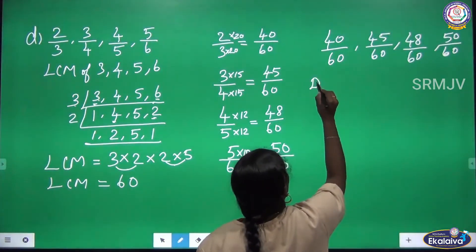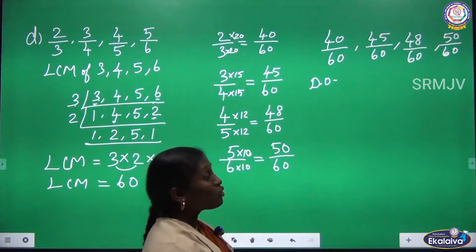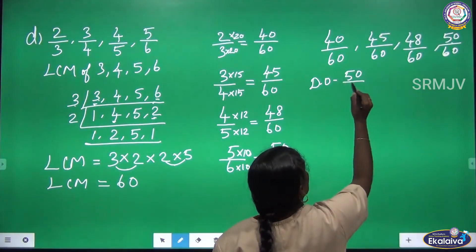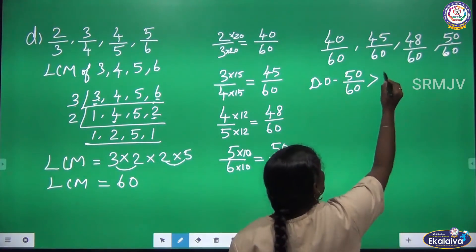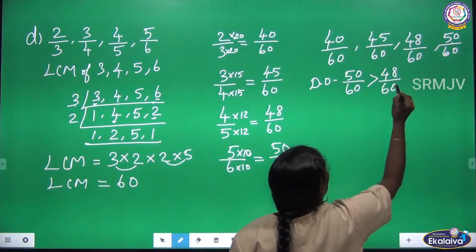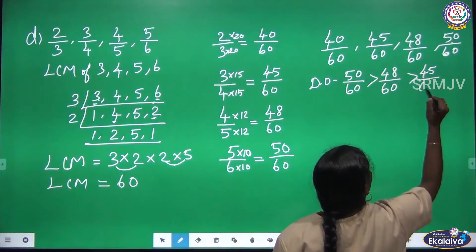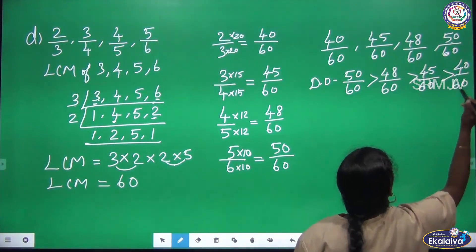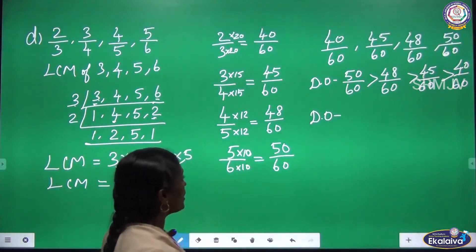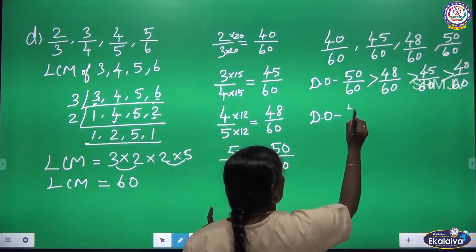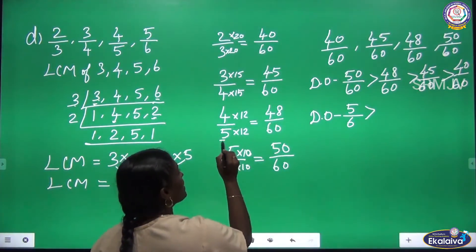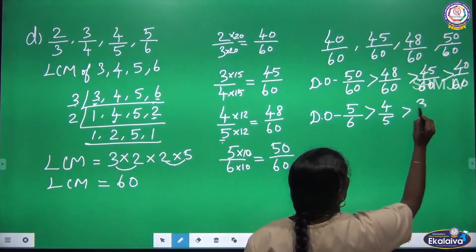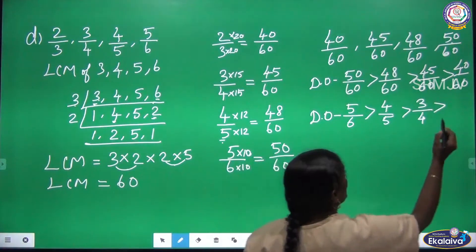We arrange the fractions in descending order — greatest to smaller. The greatest numerator is 50, so 50/60 comes first, then 48/60, then 45/60, and 40/60 is the smallest. Converting back to original fractions: 50/60 = 5/6, 48/60 = 4/5, 45/60 = 3/4, and 40/60 = 2/3.